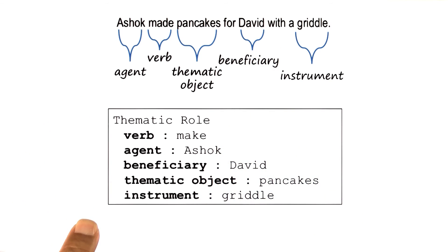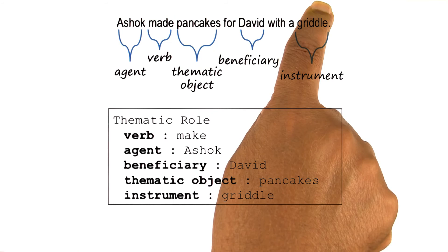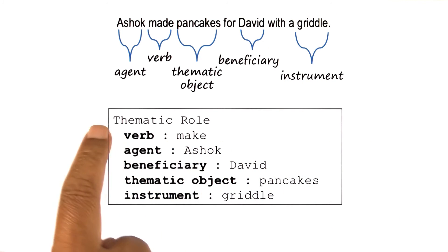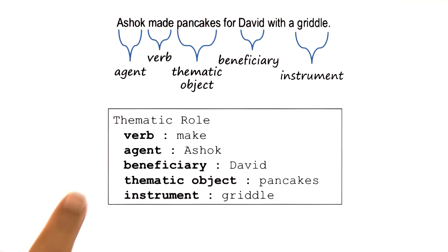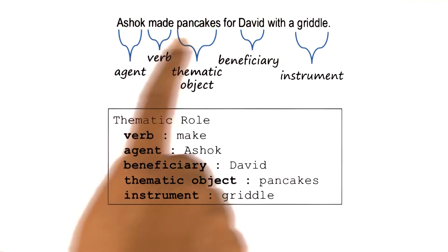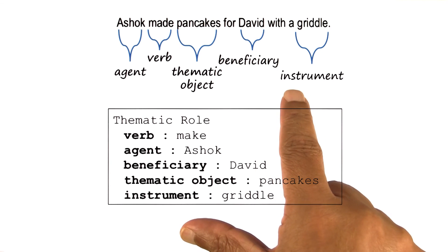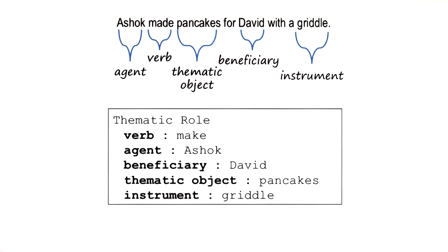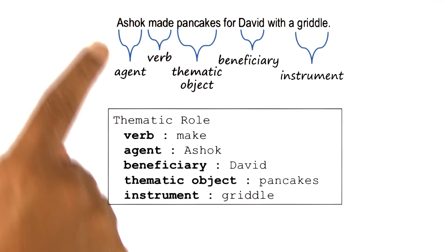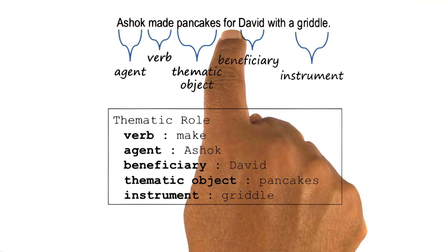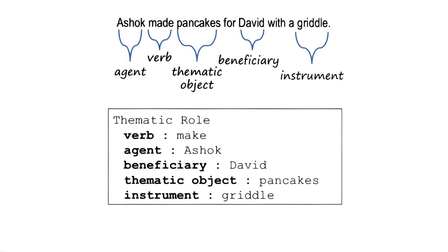This frame representation of the meaning of this particular sentence allows you to draw the right inferences. Given the action make, the thematic role pertains to the relationship of various words in the sentence to this particular action of making. Ashok is the agent, David is the beneficiary, and so on. So far we have described the meaning of this sentence and how we can capture that meaning in this frame. We have not yet described the process by which this knowledge is extracted out of the sentence. The extraction of the meaning of this sentence is exactly the topic that we will discuss next.